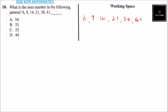So you can see here from 6 to 9 the difference is 3, from 9 to 14 the difference is 5, from 14 to 21 the difference is 7, from 21 to 30 the difference is 9, and here it is 11.